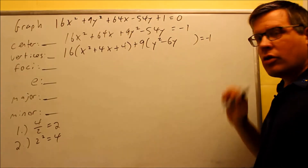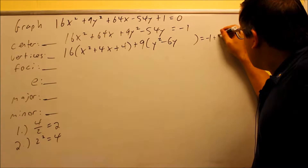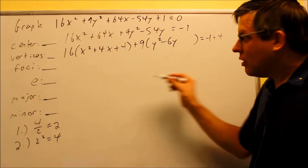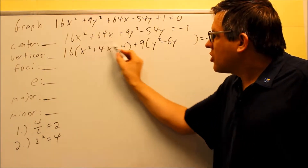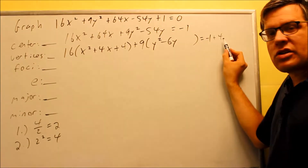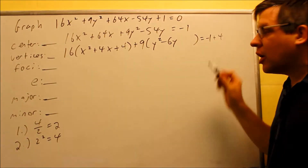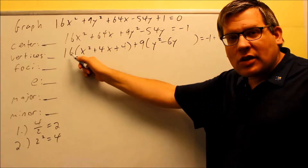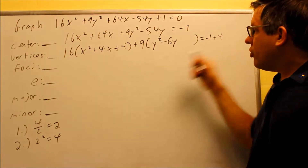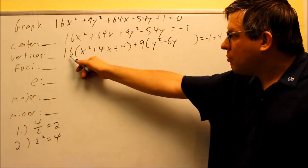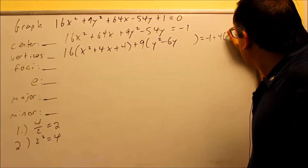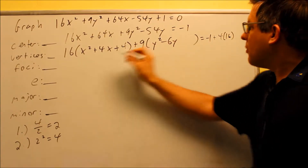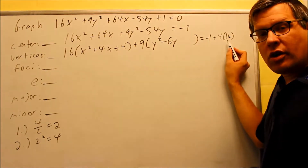We also have to add 4 to the other side, but not just 4 — that would be incorrect. Because if you multiply back out, you'd get 16 times 4, which wouldn't cancel with just 4 on the other side. So whenever you complete the square and there's a number outside the parentheses, whatever you add inside must be multiplied by that outside number when brought to the other side. We must multiply by 16.